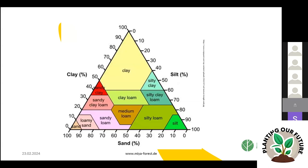Of course, soils don't always consist of only sand, clay, or silt. Mixing these three particles in any percentage gives us the soil texture triangle — just so you've seen it once; nothing you have to memorize, but good to know.